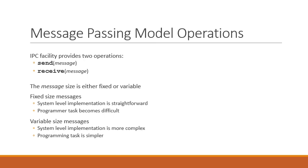What operations are available in the message passing model? The Inter-Process Communication facility provides two fundamental operations for the exchange of messages: the send operation — with the message to be sent as its parameter — and the receive operation — with the received message as its parameter. The message size is either fixed or variable, so from the message size point of view, there are two considerations: fixed size or variable size messages.